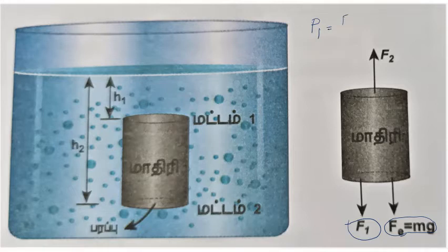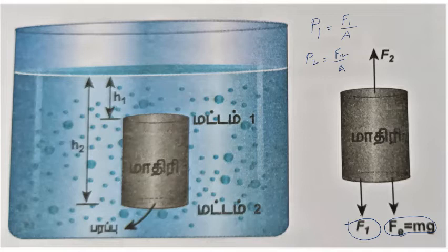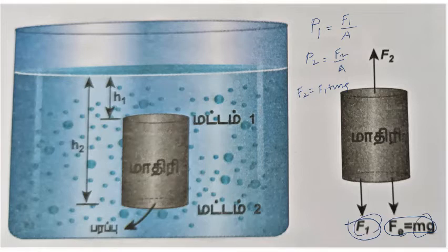If you want to see F1, you can see that F2 is equal to F2. Now you can see F2 is equal to F1 plus Mg. If you want to see the F2 is equal to F1 plus Mg.